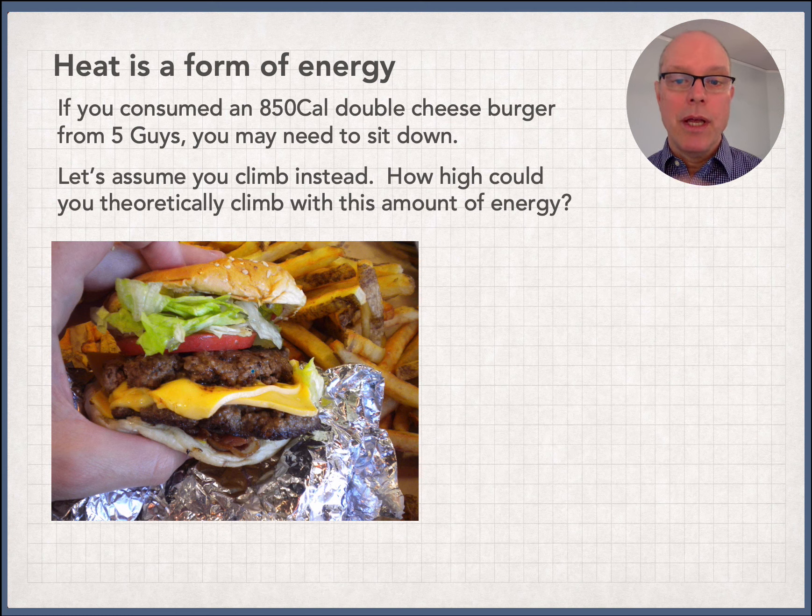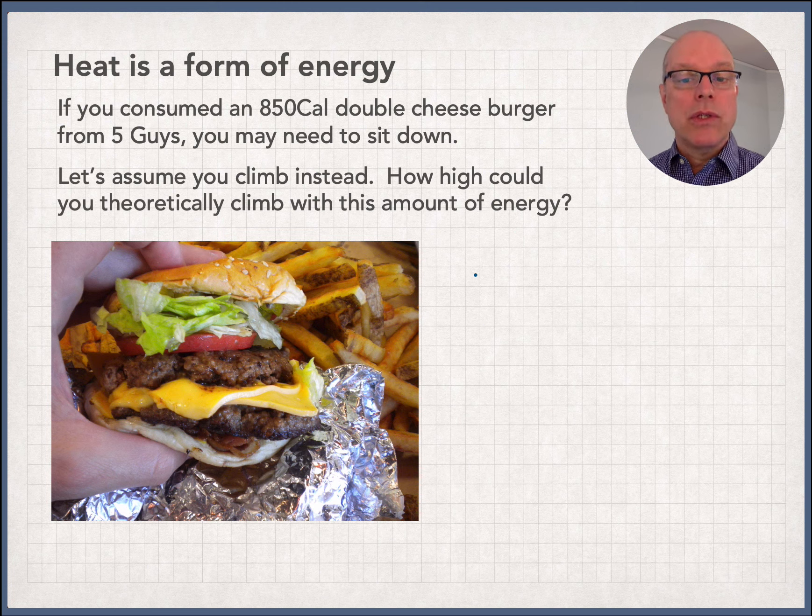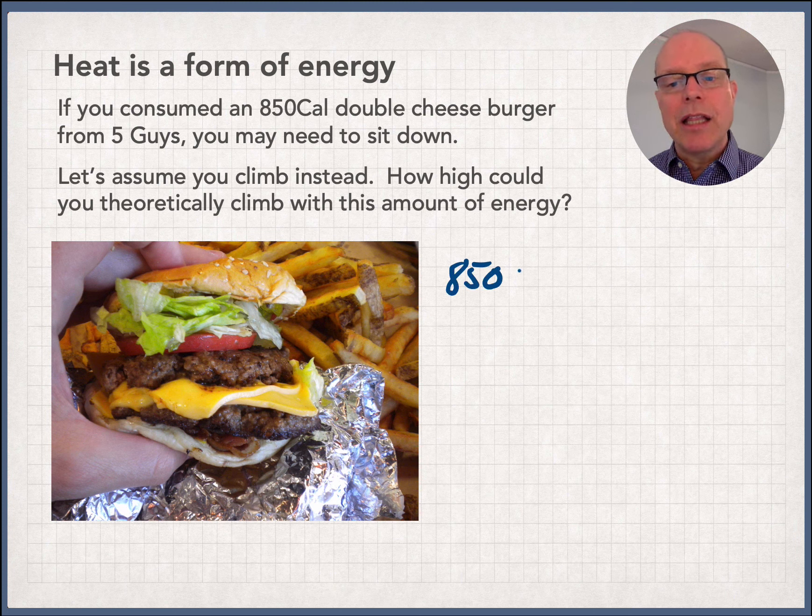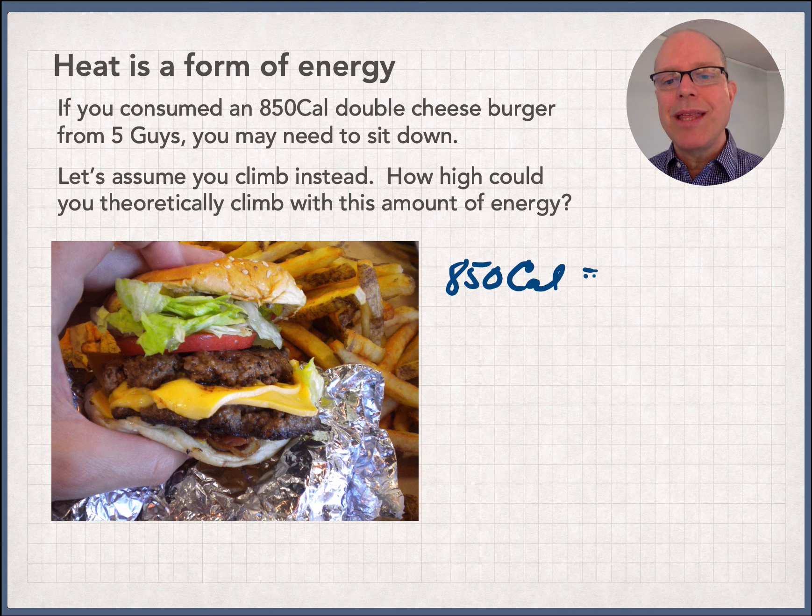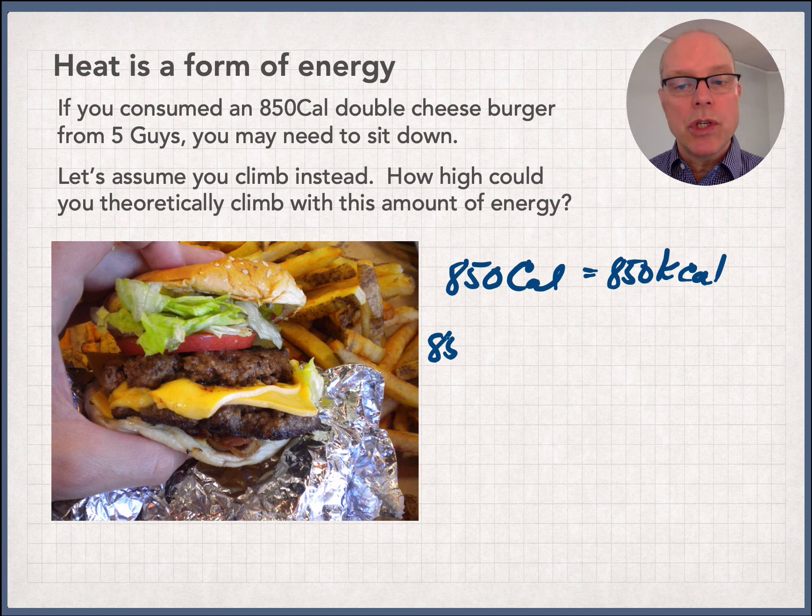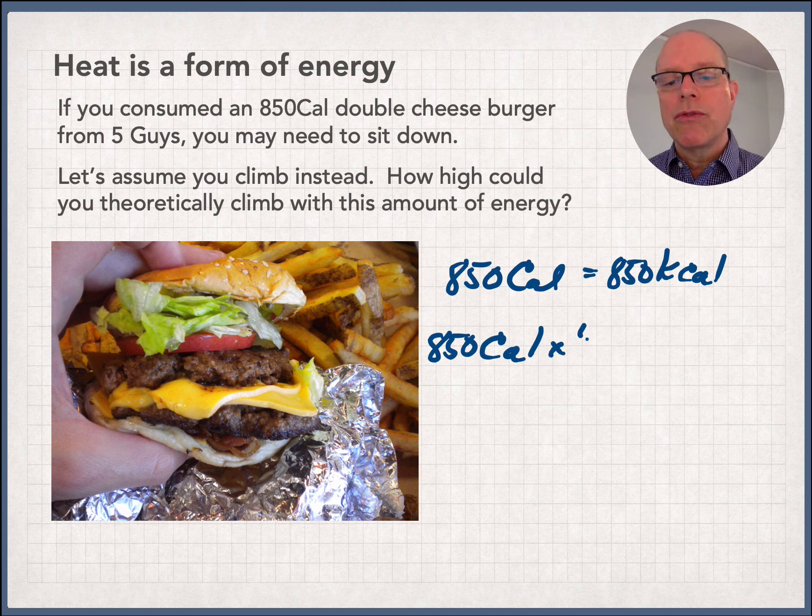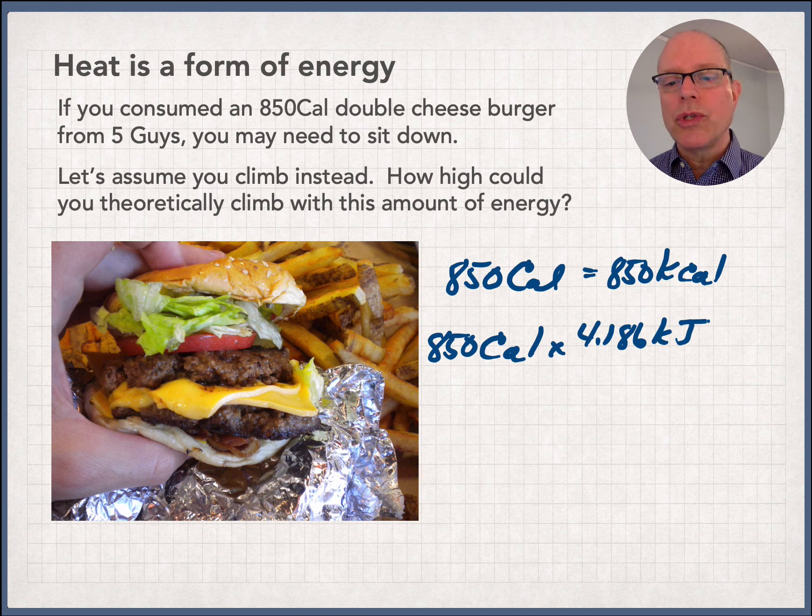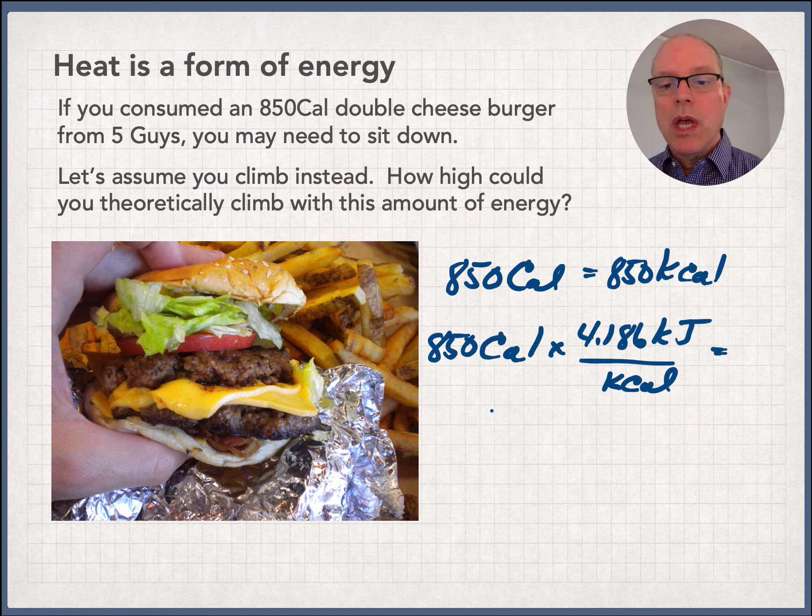So here's an 850 calorie double cheeseburger from Five Guys. And the question just is how high could you theoretically climb? Well, that's a lot. So I'm going to give you a couple of facts in this slide. 850 big C calories, you may know this, but when you see it with a big C, that is equal to 850,000 of the little c calories. Also, 850 big C calories can be converted to physics units like so. So I will take 850 big C calories times 4.186 kilojoules per kilocalorie. And I could have just written this with a big C cal, but I just showed you that above.